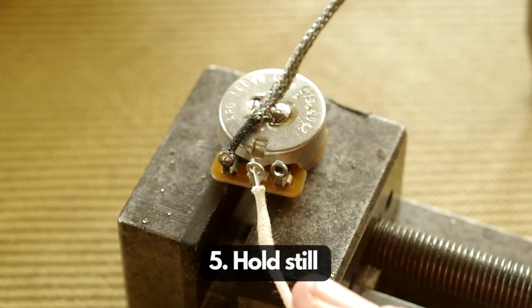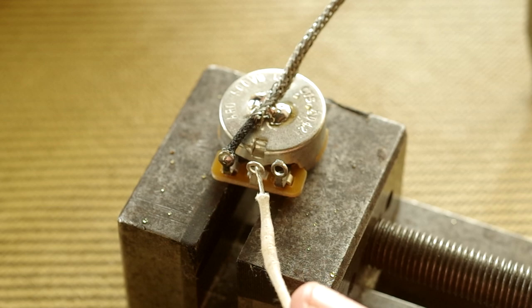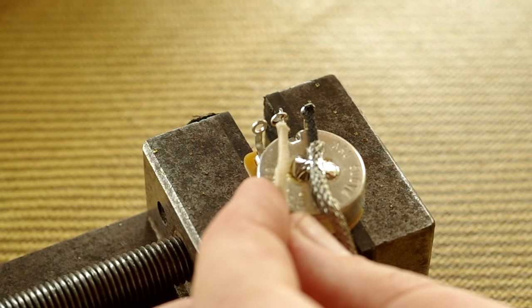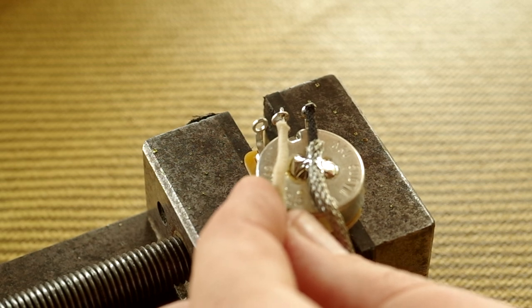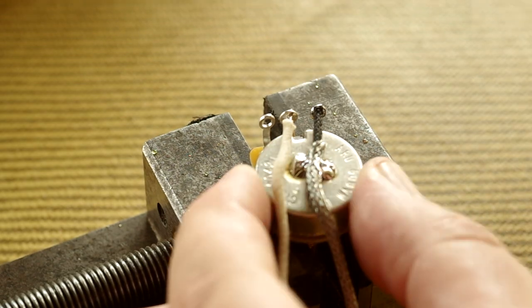My tip number five is to hold as still as you can when the solder is solidifying. If you're moving around, you're going to get a cold joint. So just use anything you can. Sometimes it gets a little bit hot on the fingers, so you can rest things up against other things or place them on top of stuff so it moves as little as possible.